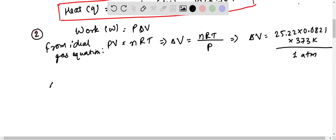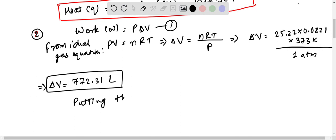Now this comes out to be delta V equals to 772.31. This is in liters. So we have got this. So we can put this value in equation 1. Putting this value in equation 1.